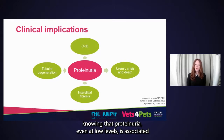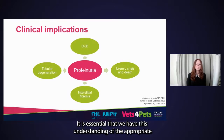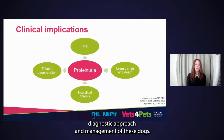Possible causes include the direct toxic effects of protein to the tubular epithelial cells, triggering inflammation and apoptosis, tubular obstruction by proteinaceous casts, and/or decreased perfusion of the tubular interstitium resulting in cellular hypoxia. Knowing that proteinuria, even at low levels, is associated with negative outcomes, it is essential that we have an understanding of the appropriate diagnostic approach and management of these dogs.